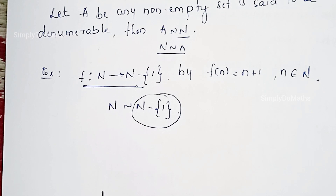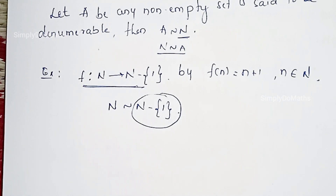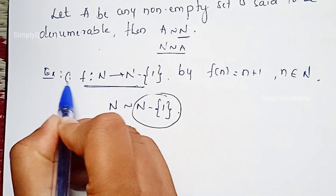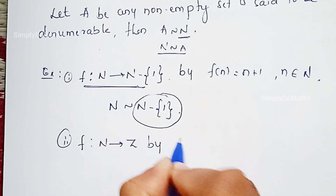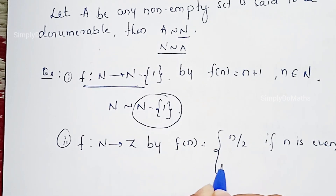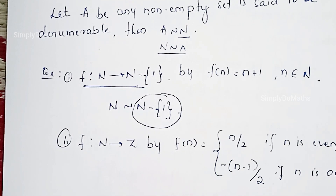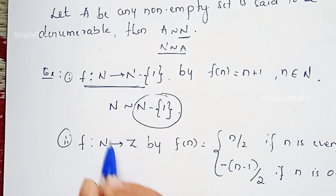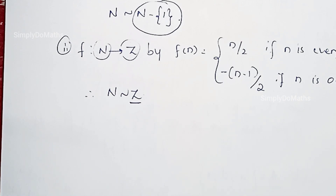We know the meaning of bijection: when a given function is one-one and onto, the function is called a bijective function. Let's go with one more example. Consider f from N to Z defined by f(n) = n/2 if n is even, and f(n) = −(n−1)/2 if n is odd. We can observe this is also a bijective function. Therefore N is equivalent to Z, and Z is a denumerable set.